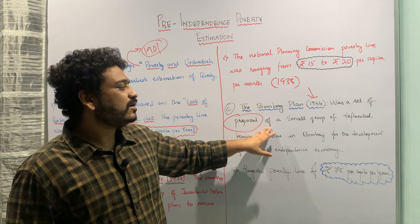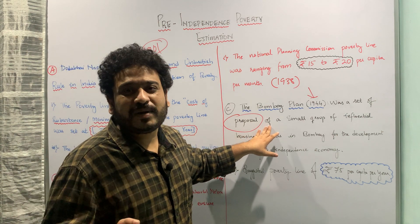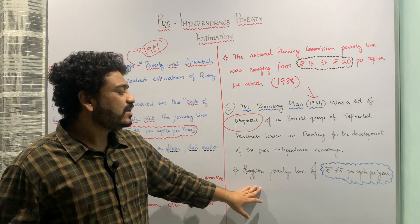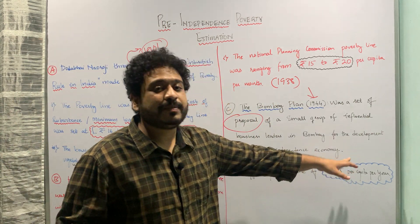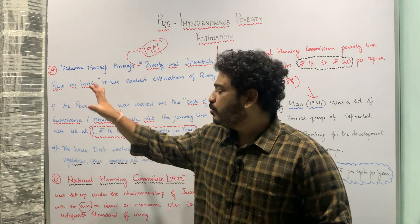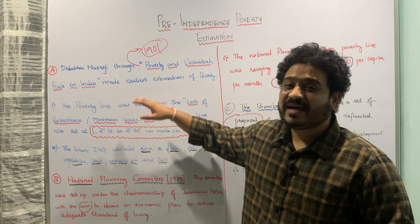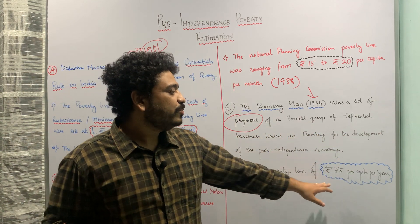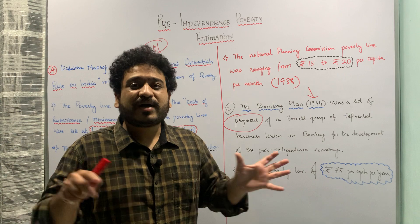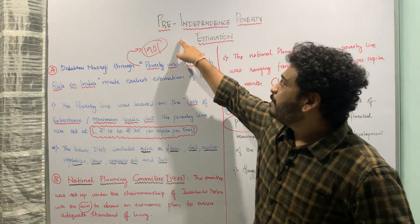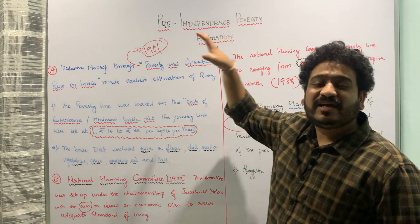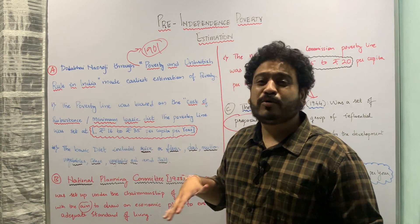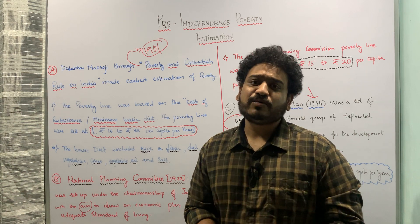The proposals were towards the development of the Indian economy post-independence. When we look at the Bombay Plan, the poverty line was set at rupees 75 per capita per year. So you can see the movement from rupees 16 to 35 in 1901 moving towards rupees 75 per capita per year. This is how you look at poverty estimation in the pre-independence phase in the Indian context. In the next class, I will be talking about the post-independence poverty estimation phase. Please stay tuned. Thank you.